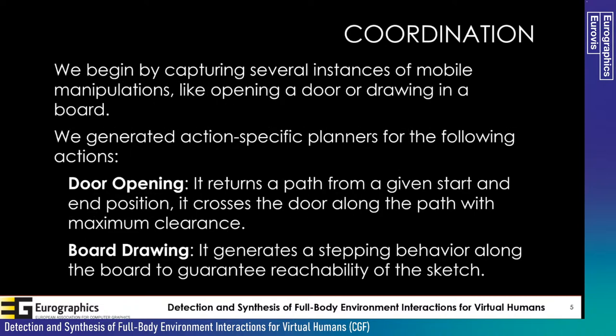The main objective is synthesizing full body coordinated actions. We chose two specific examples selected for complexity and the need to coordinate lower and upper body: door opening and drawing on a large board. We captured several instances of these actions, then designed specific planners for each task. For door opening, the planner finds a path from start to end positions at opposite sides of the door with maximum clearance. For board drawing, the path follows the sketch so the character can reach every part, with planners providing the path while coordination handles the speed.